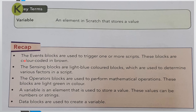And now for a recap: the Events Blocks are used to trigger one or more project scripts and are color-coded in brown. The Sensing Blocks are light blue colored blocks used to determine various factors in a script. The Operator Blocks are used to perform mathematical operations and are light green in color.